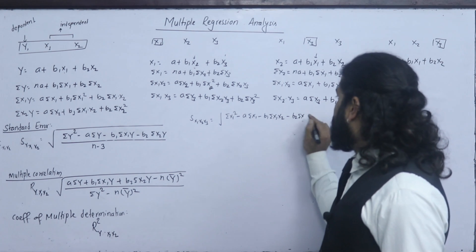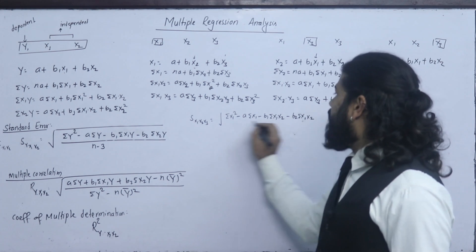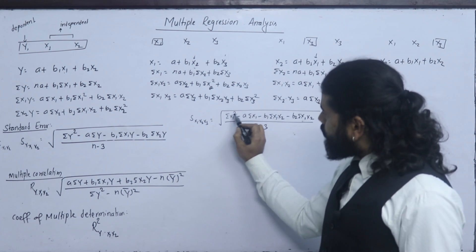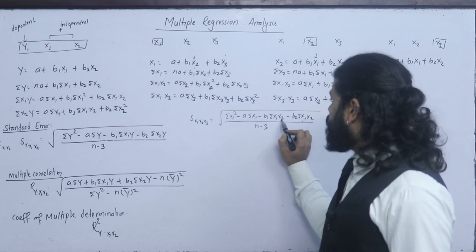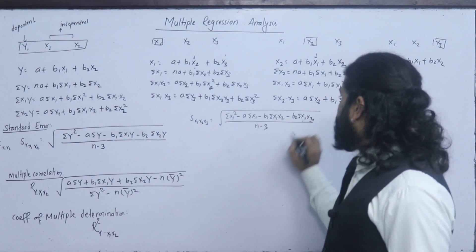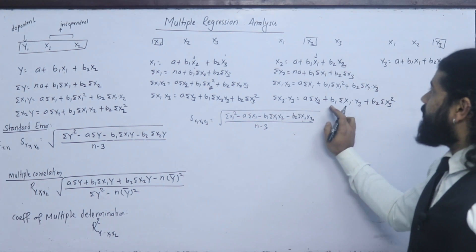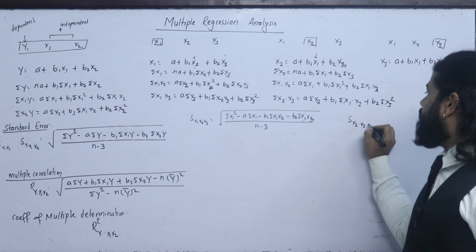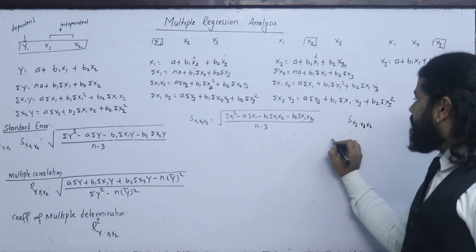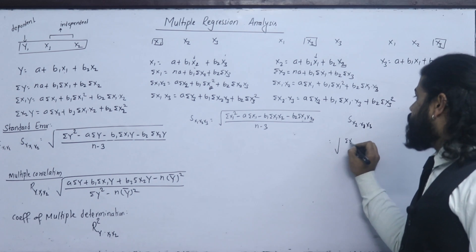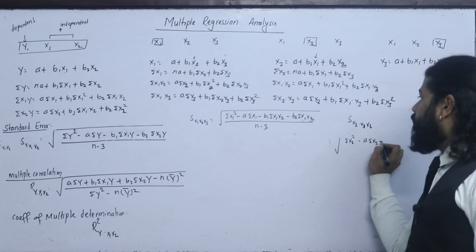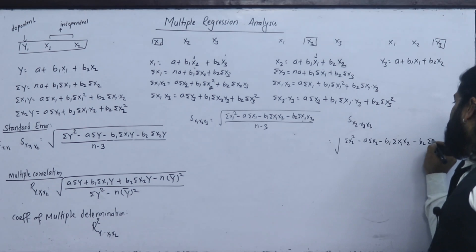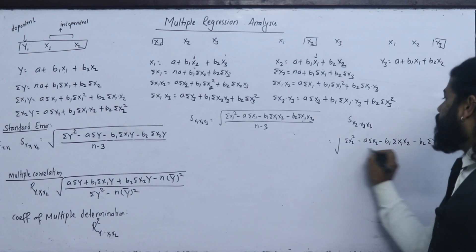So x1 is related to x2, and x3 equals x2. We want to see x1 squared, x1, x2, x3. The coefficient of multiple correlation r: if x2 is dependent on x3, and x1, x3 are considered, then summation x2 squared minus a summation x2 minus b1 summation x1 x2 and b2 summation x2 x3. x3 is independent.